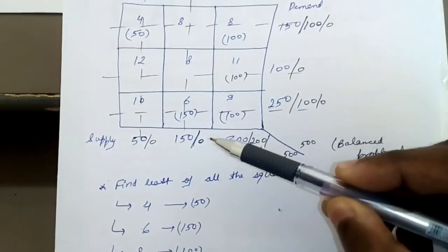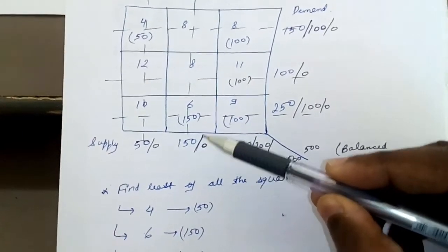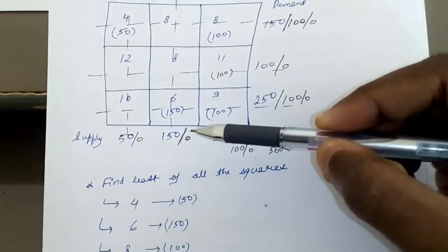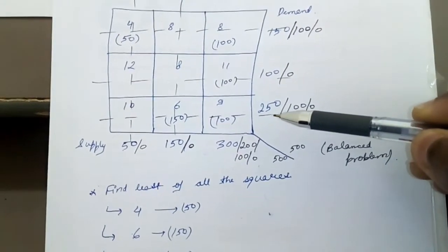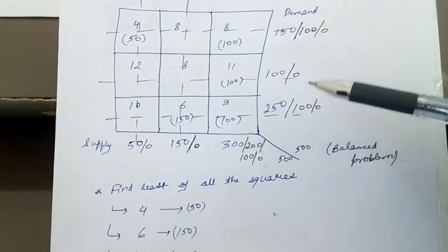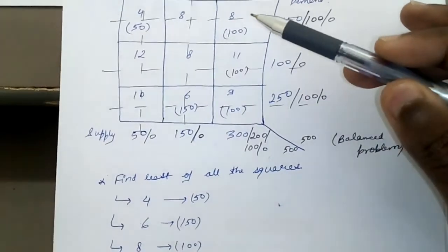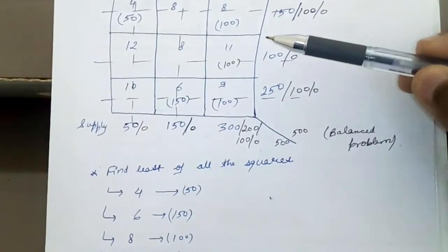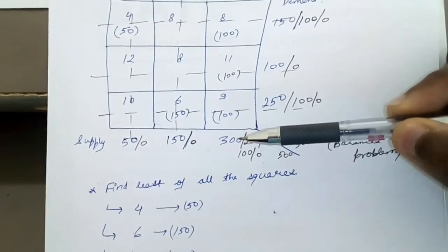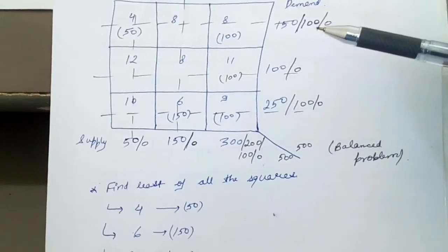Now what values are left: 8, 11, and 9. So the minimum is 8. Here supply is 300 but demand is only 100 from the first step. You write 100 here, you put 0 here, you cross this row like this and here supply remains 200.